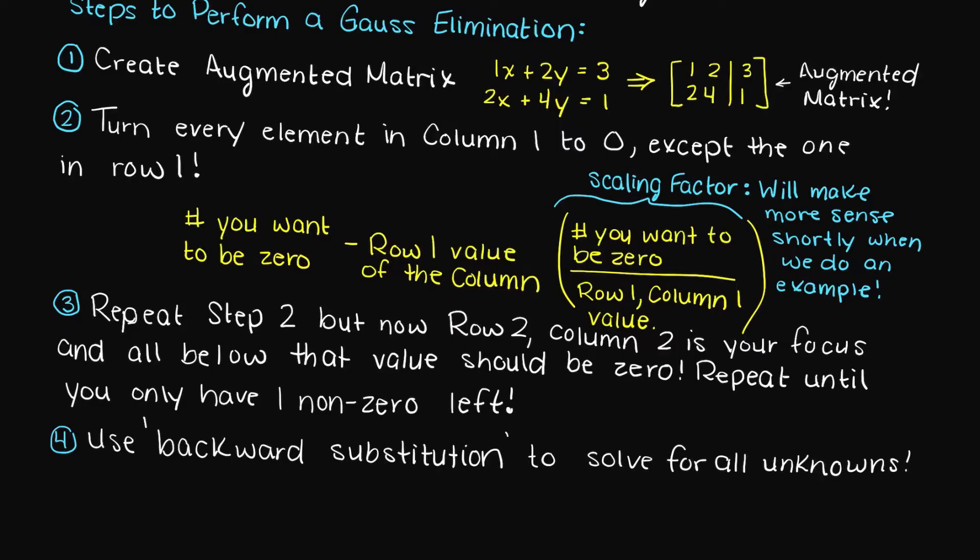I think this topic is best taught through an example, so let's do that. Let's say we have found that our system of linear equations is the following. Going through our Gauss elimination steps, we must first convert it into an augmented matrix like so.